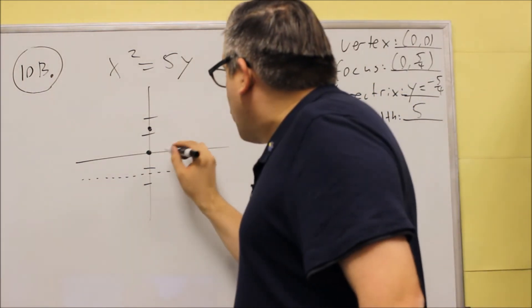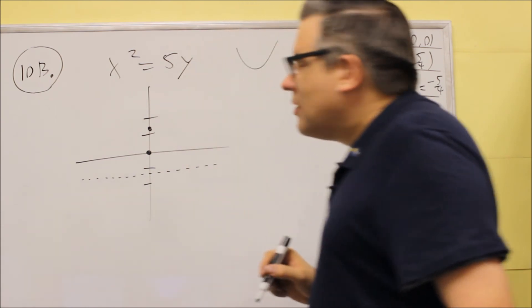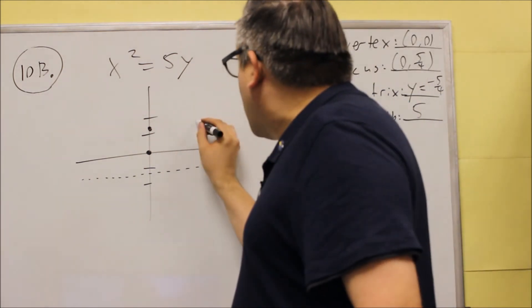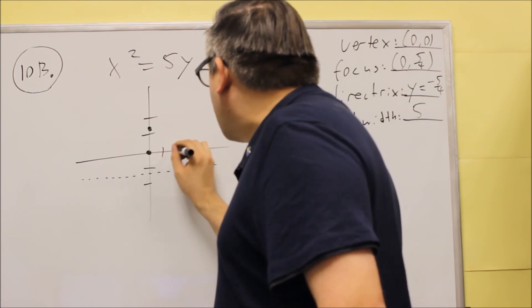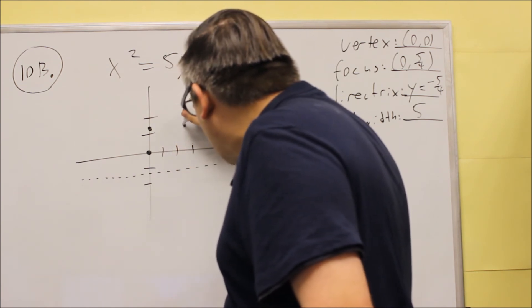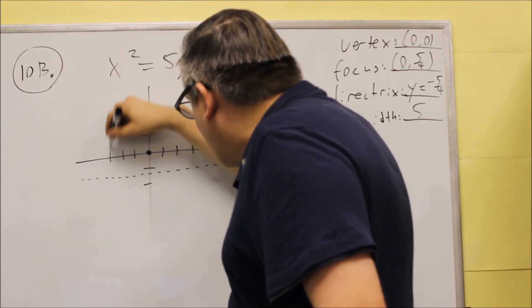That means that from this point, we're going to go, we have to split that, divide it by 2. So, we have to go 2.5 to the right and 2.5 to the left.